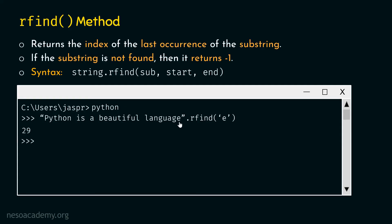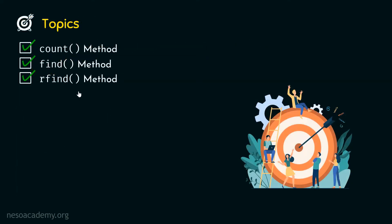In another example, 'Python is a beautiful language'.rfind('e', 1, 5) — searching within indices 1 to 5, covering 'y', 't', 'h', 'o', 'n'. There is no character 'e' within this range, hence rfind will return minus one. We are now done with all the topics: count method, find method, and rfind method. Thank you for watching this presentation. I will see you in the next one.